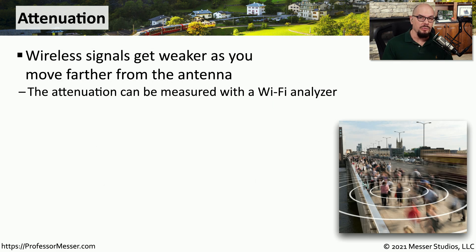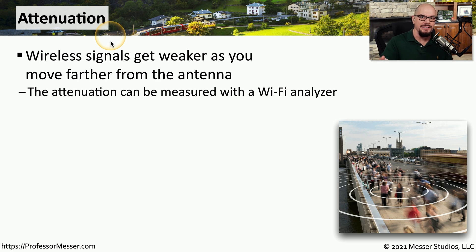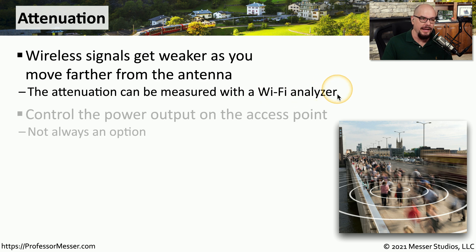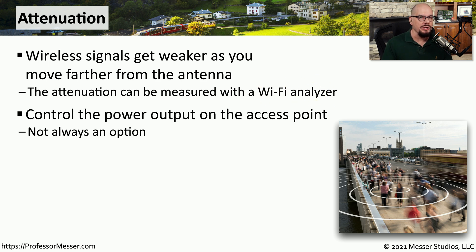If you've ever worked on a wireless network, you know the farther away you get from that access point, the less signal will be available and your network connection will probably run slower. This is because as you move farther away from that antenna, there will be attenuation as that signal gets weaker and weaker. If you need to see exactly how much attenuation, you can check the local statistics on your wireless receiver or check with an external Wi-Fi analyzer.